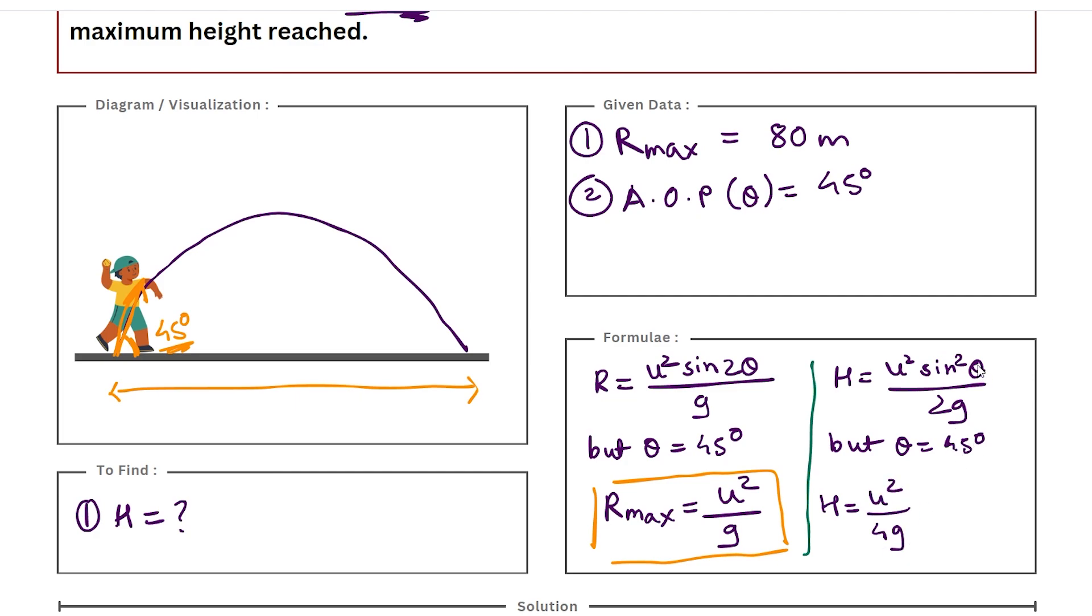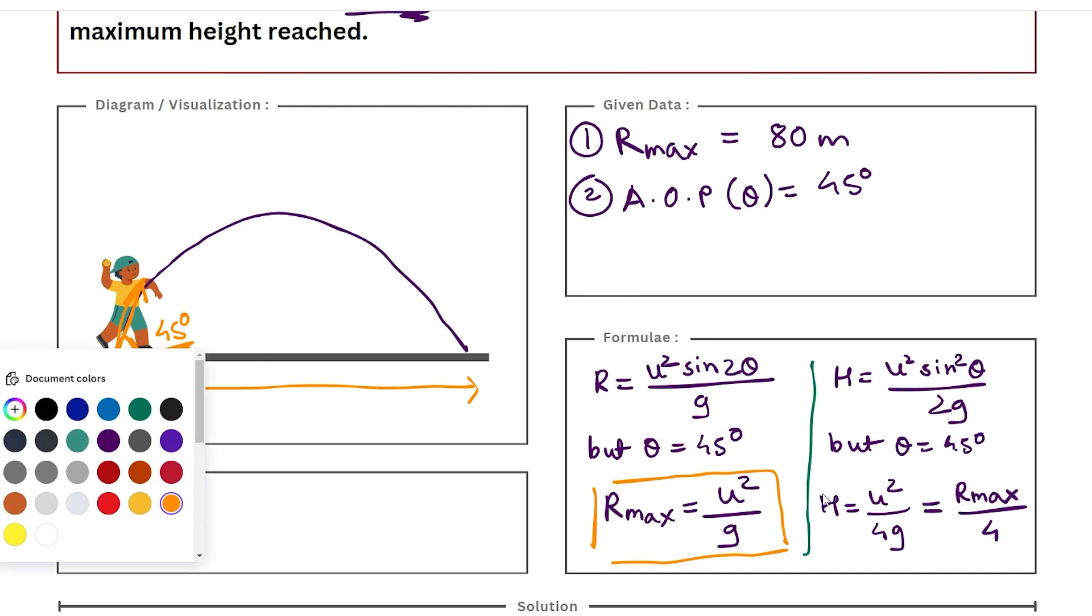Just substitute theta as 45 degrees in this equation and you will get this. And if I compare both these equations, I can say H can also be written as R_max/4, because R_max is u²/g. So this again is a shortcut formula.